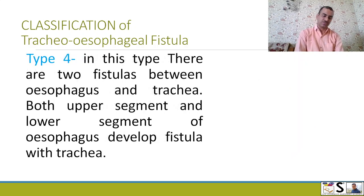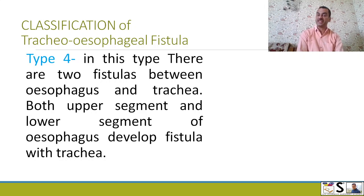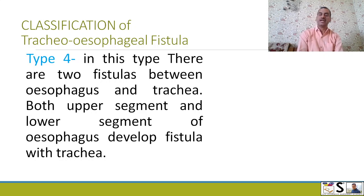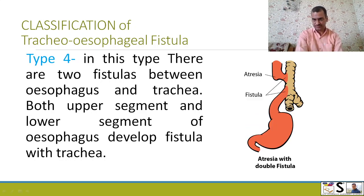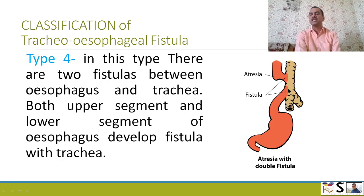Now, Type 4. In this type, there are two fistulas between the esophagus and trachea. Both the upper segment and lower segment of the esophagus develop a fistula with the trachea. The upper part has a fistula and the lower part also has a fistula, so both are connected with the trachea.